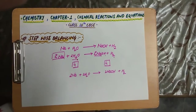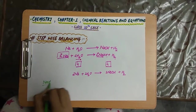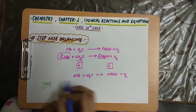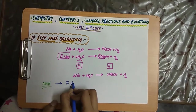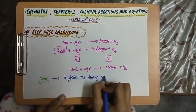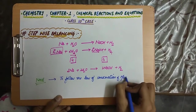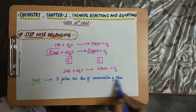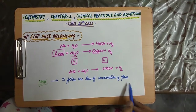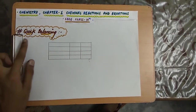Now here comes a question in our mind: why is there a need to balance such equations? The need to balance these equations is to follow the law of conservation of mass, which we studied in Class 9 — that mass can neither be created nor destroyed in a chemical reaction. So to follow the law of conservation of mass, we need to balance these chemical equations. Now moving to the next method of balancing, that is, quick balancing.